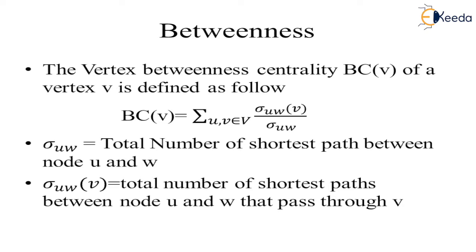Betweenness, the vertex betweenness centrality BC(v) of a vertex v is defined as follows. BC of vertex v equals summation over u,v which belongs to V. U and V are vertices which belong to V, the set of all vertices in a graph.